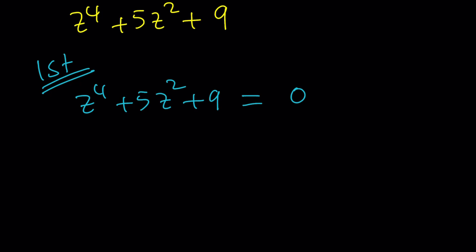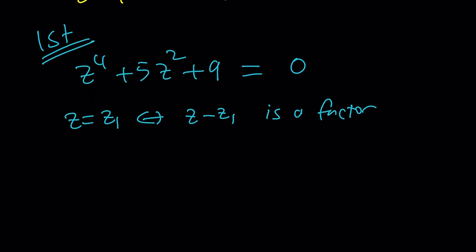The factor theorem tells us if z equals z sub 1 is a solution, then z minus z sub 1 is a factor, and vice versa. So that's the property we're going to use. There's quite a few different ways to solve it. Since we only have even powers, this is called a bi-quadratic.